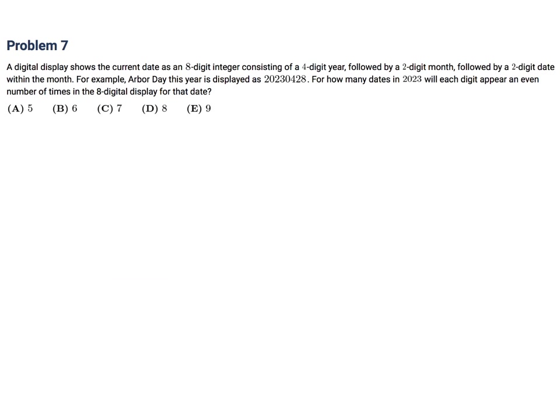A digital display shows the current date as an 8-digit integer consisting of a 4-digit year, followed by a 2-digit month, followed by a 2-digit date within the month. For example, Arbor Day this year is displayed as 20230428. For how many dates in 2023 will each digit appear an even number of times in the 8-digit display for that date? All the dates are going to have 2023 and then four more slots to fill in.